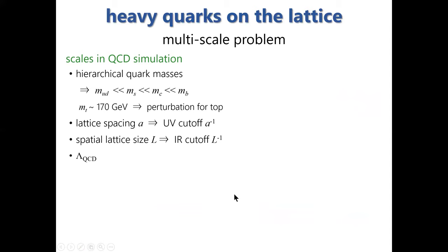Simulating heavy quarks on the lattice is not straightforward because of the infamous multi-scale problem. Let me list the scales in a QCD simulation. We have hierarchical quark masses from the up quark mass to the bottom. The top quark mass is too large and we can safely use perturbation theory. The minimum distance scale sets the UV cutoff, and the largest distance scale — the spatial lattice size — gives the IR cutoff.